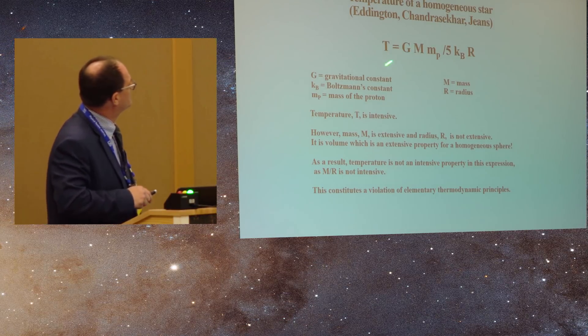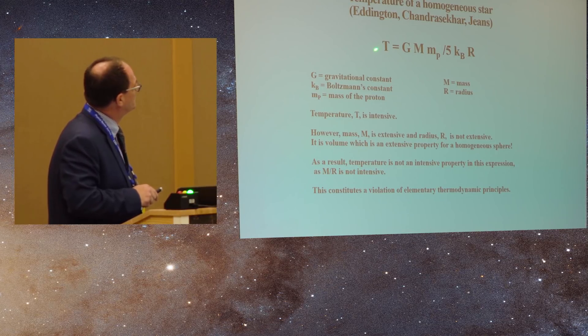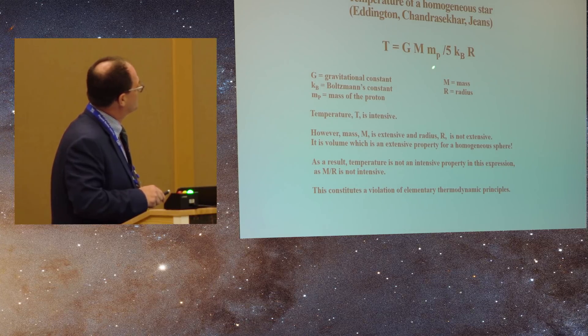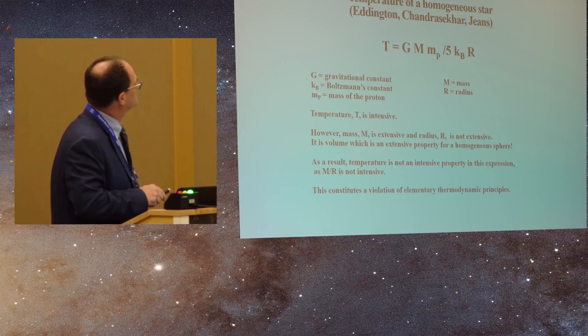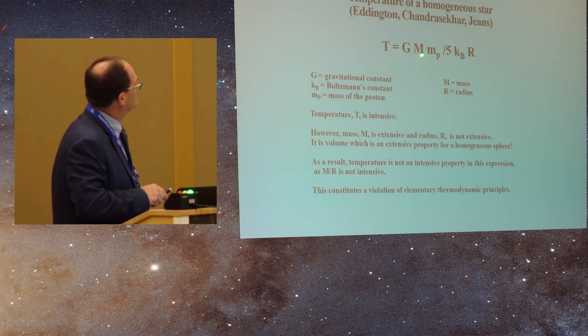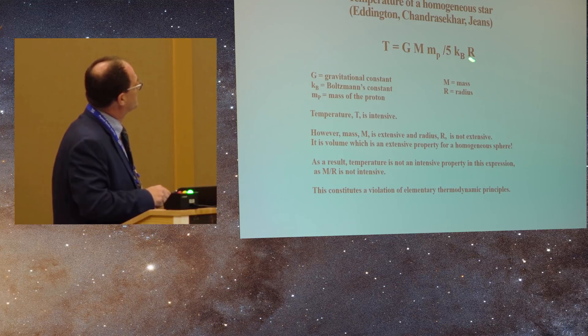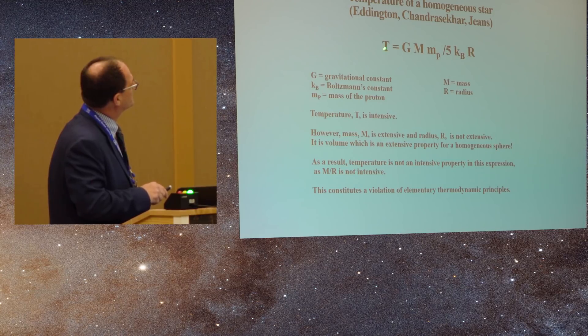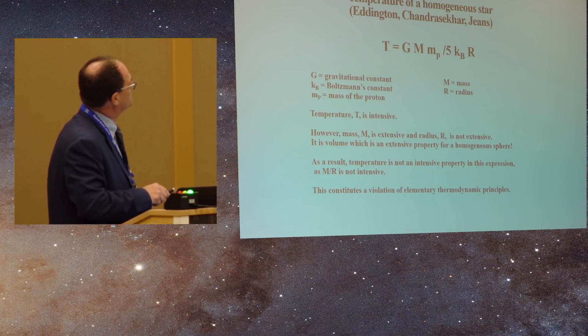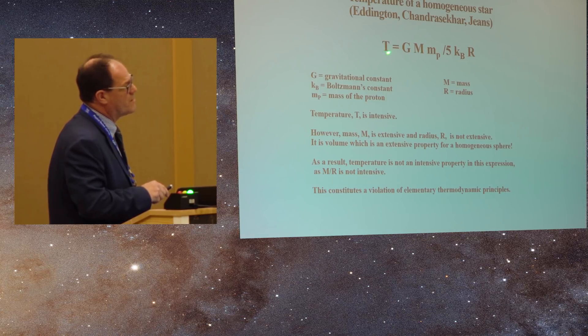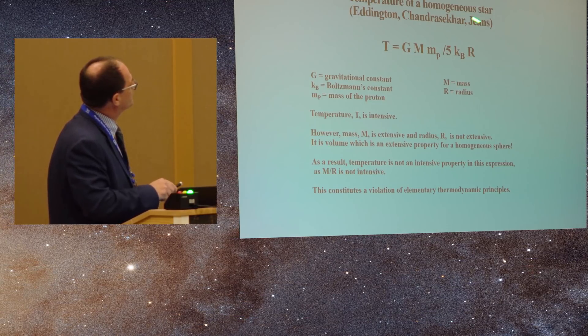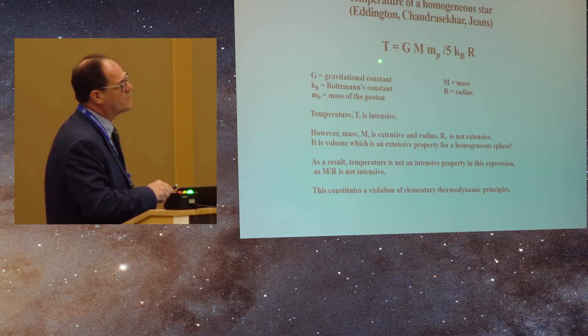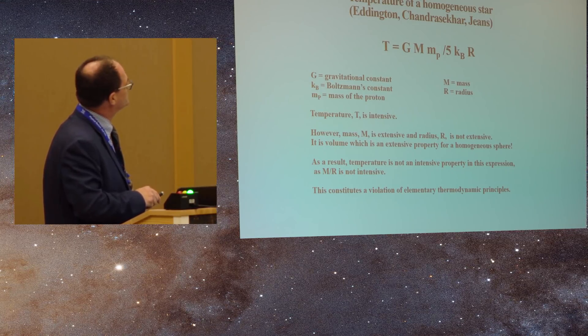So the problem here is that temperature, of course, is intensive. But if you look on the right, the mass of the proton is intensive, it's a constant, and Boltzmann's constant is a constant, and so is G, so we don't worry about them. So now we have mass, which is extensive, divided by the radius, which is neither intensive nor extensive. So in order to make temperature intensive here, you'd have to divide mass by volume. But since you're not doing it, you're not getting temperature as an intensive property. So the problem is that for these equations for the stars, when you use gravitational collapse, you don't get temperature as an intensive property. So this is a violation of thermodynamics.